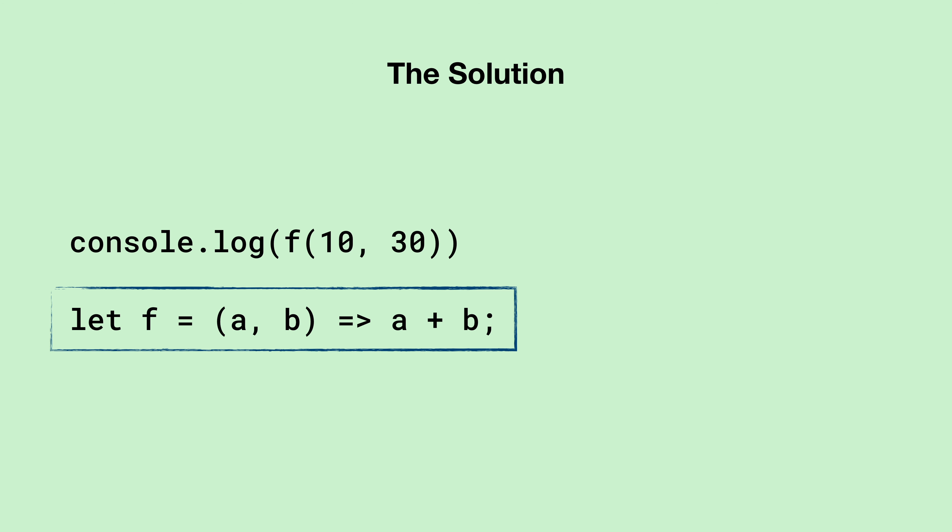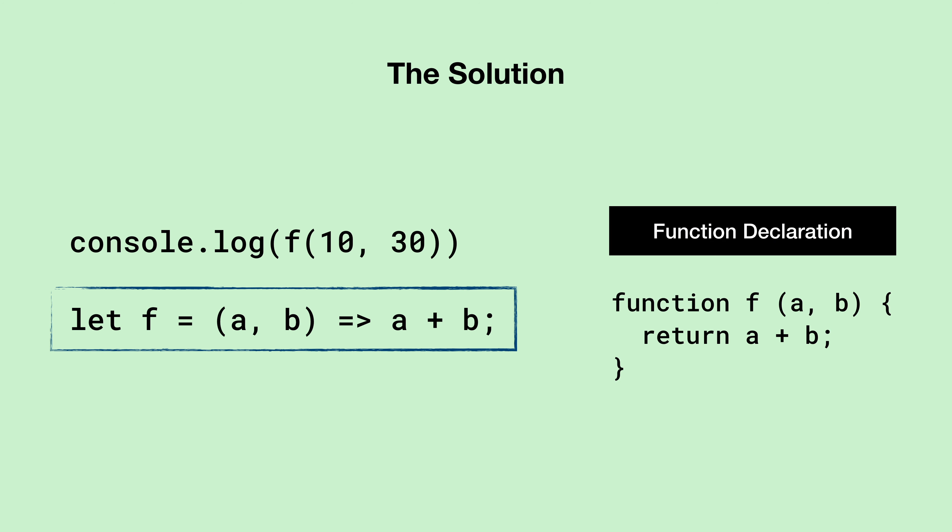Since we are declaring an arrow function and not using the function declaration syntax, there will be no hoisting performed when the code executes. Therefore, a reference error will be the output, which is the correct answer.